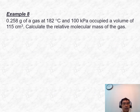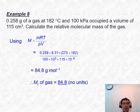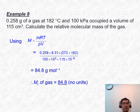Alternatively, solve example 8 by combining everything: molar mass = (mass × R × T) / (P × V). The important thing is correct unit conversion — temperature in Kelvin, mass in grams, volume in meter cubed, and pressure in Pascal. The result is 84.8 g/mol, so Mr = 84.8, no units.